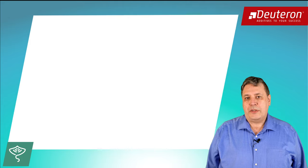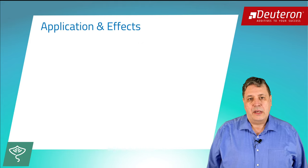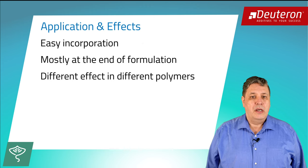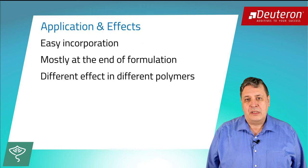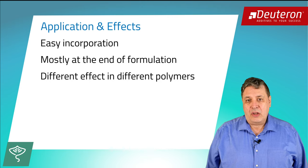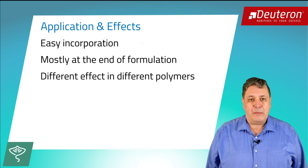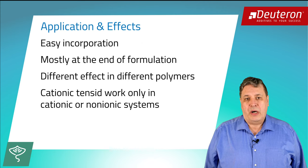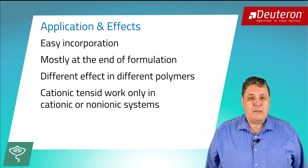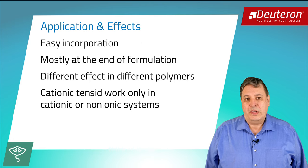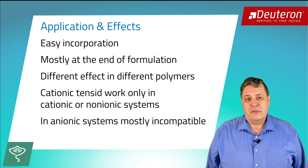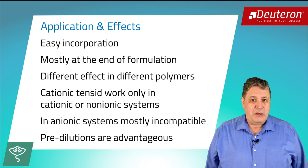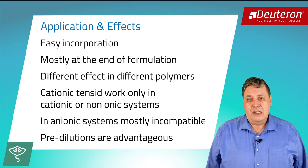There is generally no optimal step for the incorporation of quads. In most cases, the addition should be made at the last stage of production. The antistatic effect depends strongly on the properties of the used polymers and other components of the formulations. The effect is definitively not determined by the dosage alone, but by the chemical and physical properties of the formulations. A limitation is that quaternary ammonium compounds are cationic tensides, meaning they are mostly only suitable in cationic or non-ionic systems. In anionic systems, they are mostly incompatible. This has to be checked in initial trials. In some cases, it may be helpful to pre-dilute the antistatic additives in a suitable solvent.